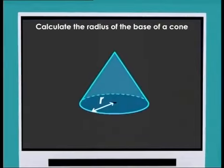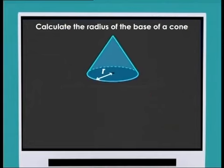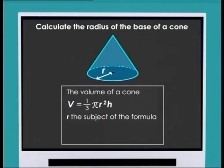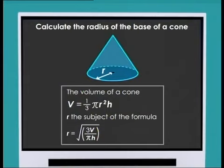To calculate the radius of the base of a cone, the formula V = (1/3)πR²H is rearranged by making R the subject, giving R = √(3V/(πH)). Thus, the radius of the base of a cone can be calculated if V and H are given.